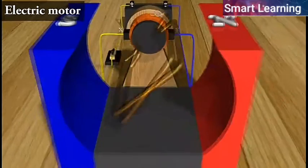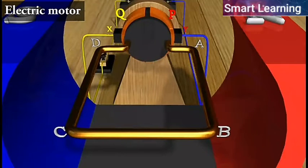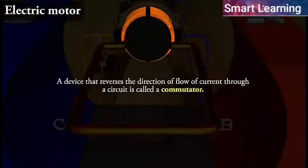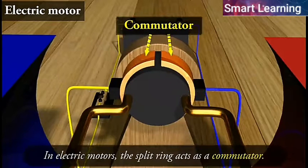At half rotation, Q makes contact with brush X and P with brush Y. Therefore, the current in the coil gets reversed and flows along the path DCBA. A device that reverses the direction of flow of current through a circuit is called a commutator. In electric motors, the split ring acts as a commutator.